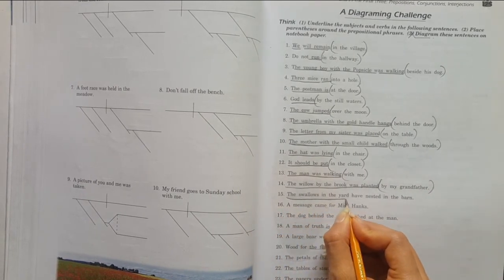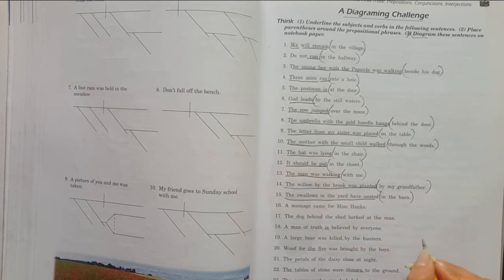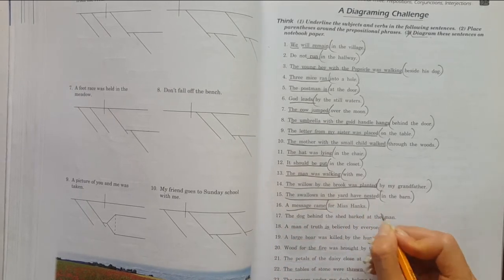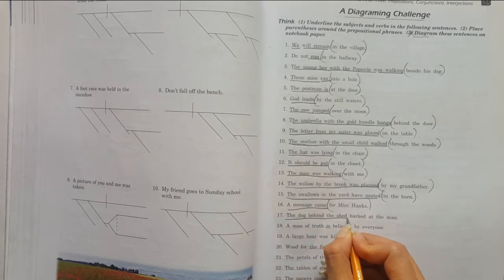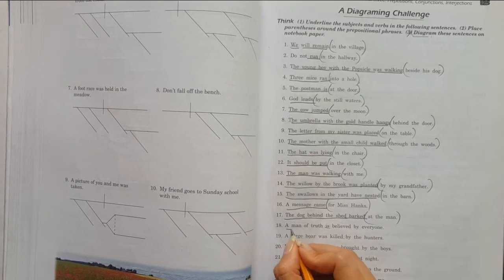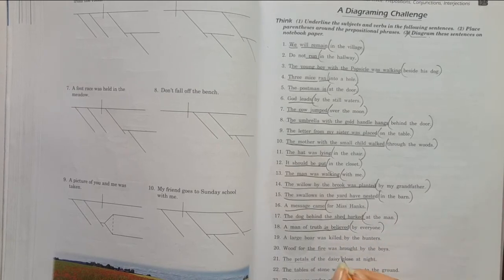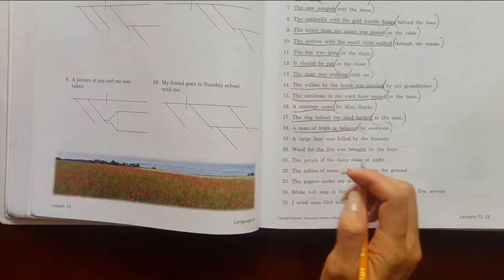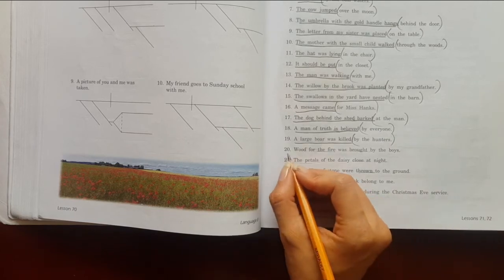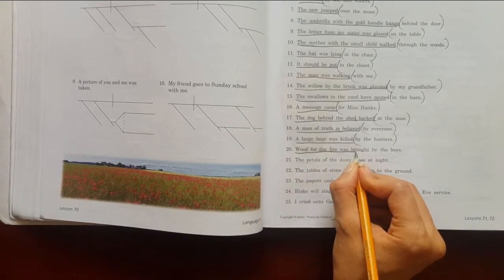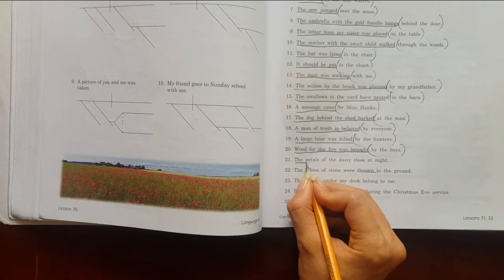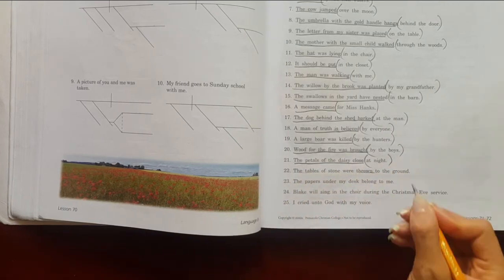Continuing: 'The willow by the brook was planted by my grandfather.' 'The swallows in the yard have nests in the barn.' 'A message came for Miss Hanks.' 'The dog behind the shed barked at the man.' 'A man of truth is believed by everyone.' 'A large boar was killed by the hunters.' Number twenty: 'Wood for the fire was brought by the boys.' Next: 'The petals of the daisy close at night.'